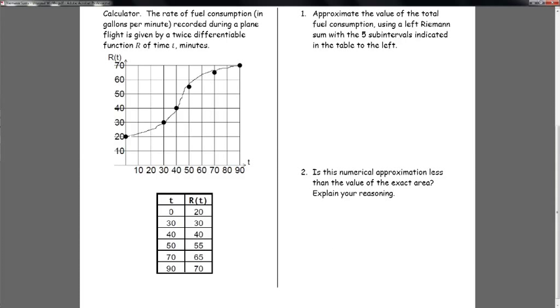The rate of fuel consumption in gallons per minute is recorded during a plane flight, is given by the twice differential function R, given in this graph below and the table. For number one, we're going to approximate the total fuel consumption. R means the rate of fuel consumption in gallons per minute for this airplane. We're going to know how much total fuel was used during the first 90 minutes.